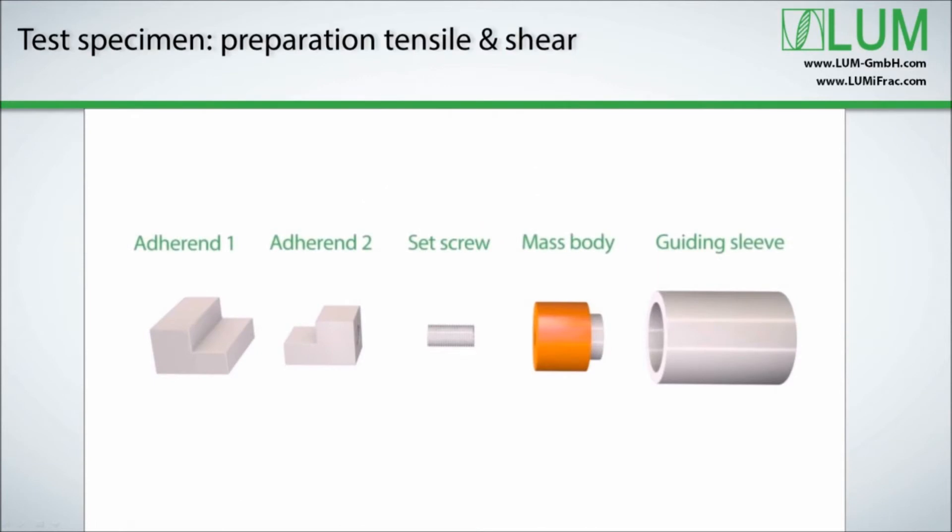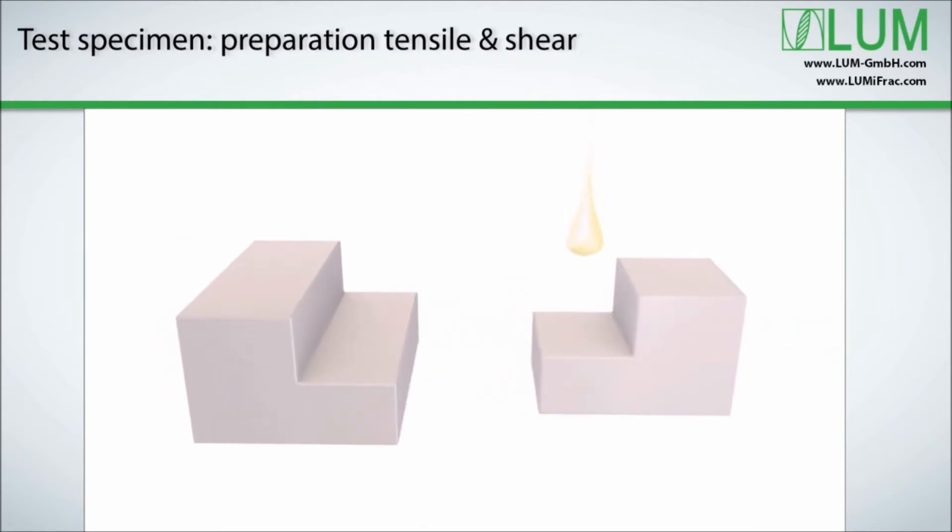In contrast to tensile testing, the preparation of shear specimen is different. The test specimen consists of two adherents, a set screw, a mass body and a guiding sleeve. As shown, the parts are joined separately. The small shear adherent is covered with adhesive, turned around 180 degrees and bonded to the broader counterpart. Afterwards, adhesive curing takes place. Time and temperature are to be considered.